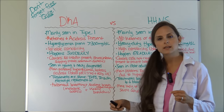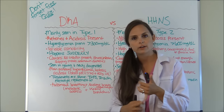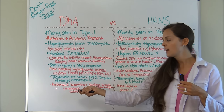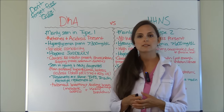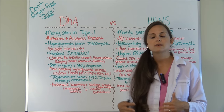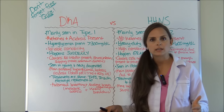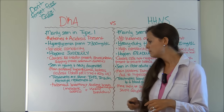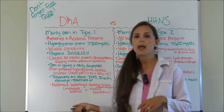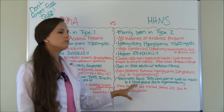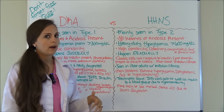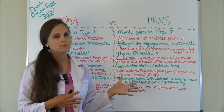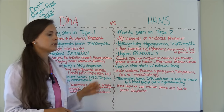In both DKA and HHNS you're going to see polyuria and polydipsia. But the big differences in signs and symptoms are that DKA patients can have Kussmaul breathing due to metabolic acidosis, where the body tries to blow off extra acid — carbon dioxide — to compensate for the acidotic conditions. This is rapid, deep breathing. They will also have acetone breath and abdominal pain due to ketone breakdown. In HHNS, there's no ketosis or acidosis, so you won't see Kussmaul breathing or fruity breath, but you're more likely to see mental status changes due to that severe dehydration.